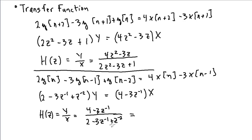But if I write this in terms of ratio of polynomials in z, to get that, I need to multiply the numerator and denominator by z squared. I'll get 4z squared minus 3z in the numerator, and in the denominator I'll have 2z squared minus 3z plus 1.